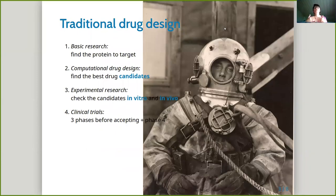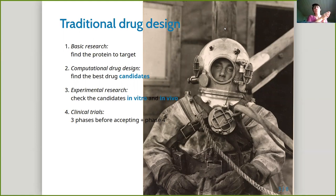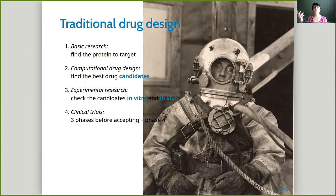Traditionally, we would first, through biological experiments, find the protein that is a cause of the disease or is very important in the disease progression. Then we would go to a bioinformatician lab and try to do some simulations to find the drug that would best fit to this protein. Next, we can go again to an experimental lab to check whether these drugs that were found computationally to bind to the protein really bind in a test tube.